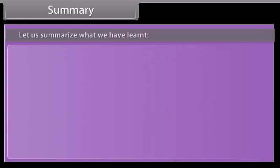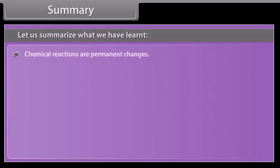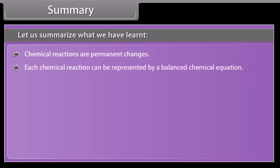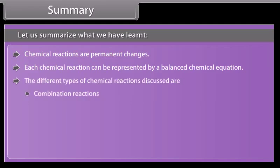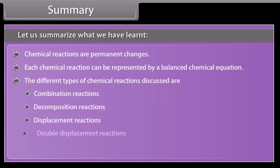Summary: Chemical reactions are permanent changes. Each chemical reaction can be represented by a balanced chemical equation. The different types of chemical reactions discussed are: combination reactions, decomposition reactions, displacement reactions, double displacement reactions, and redox reactions.